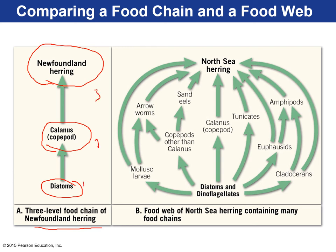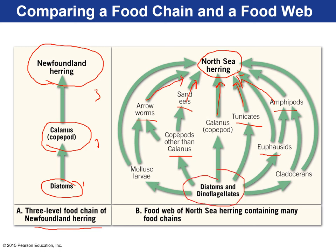But the North Sea herring doesn't just eat copepods — it also eats amphipods, tunicates, Calanus, sand eels, and arrow worms. A food web shows this more dynamic view of the interconnected feeding relationships among different species. Diatoms are eaten by all of these organisms. This is a more accurate depiction of the feeding relationships among different ocean organisms.